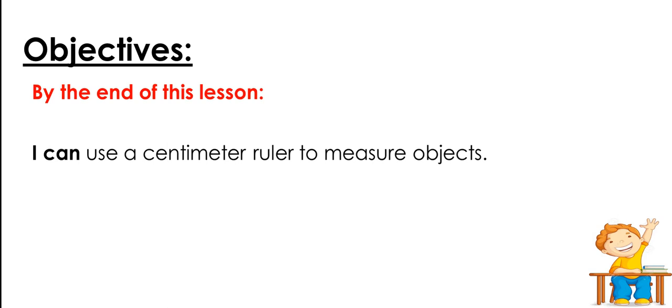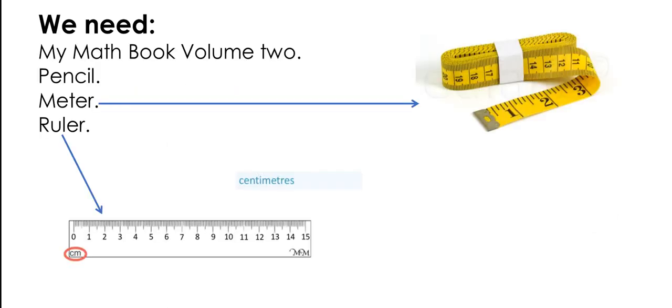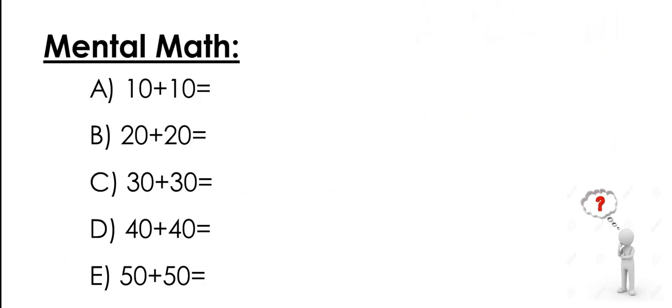For today's lesson we need your math book volume 2, a pencil, a meter stick, and a ruler. A meter stick looks something like this — we're going to use the centimeter side. You can use one that looks like this or anything similar that you have at home. For the ruler, look for one that has a centimeter side. Go grab these things and then let's continue.